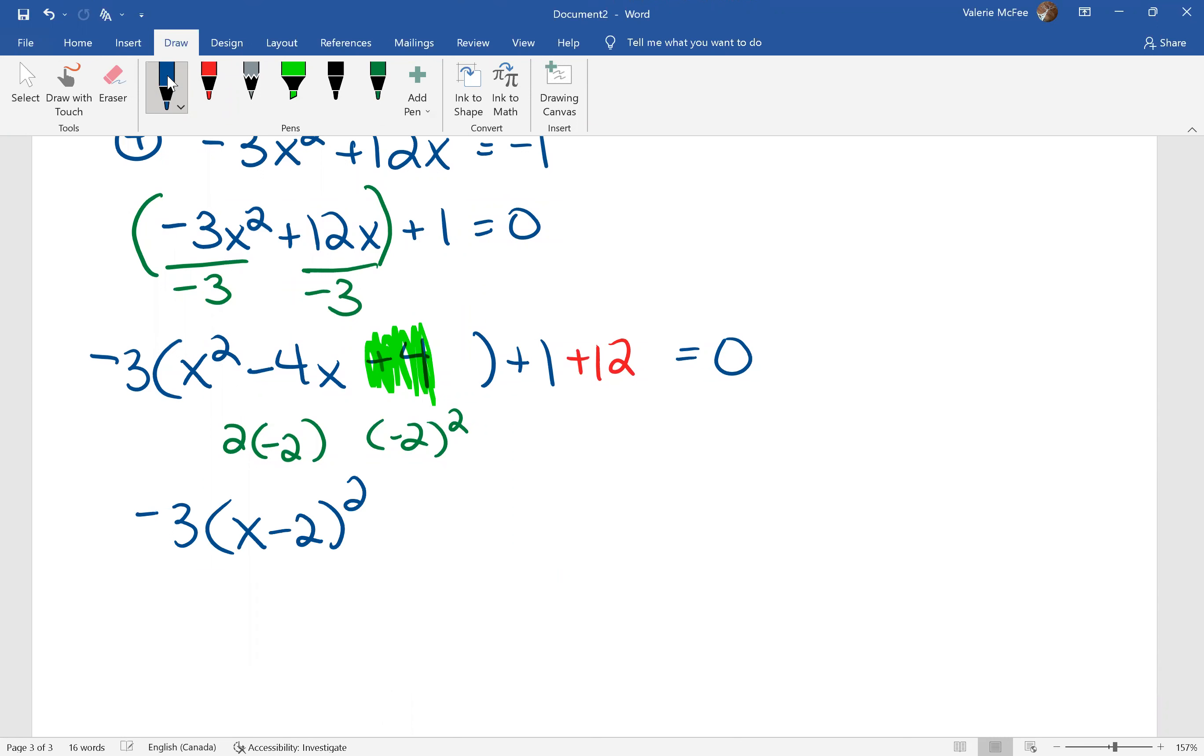Negative 12 plus 12 balances our equation. We need to factor and simplify. And now we're just going to use the square root method to finish solving the equation.